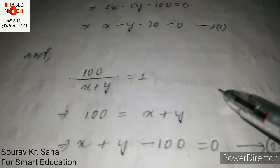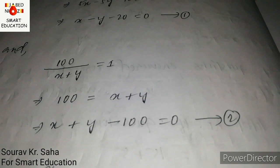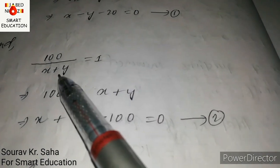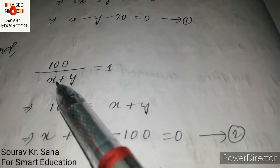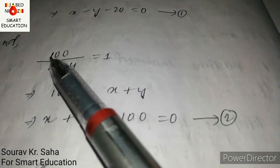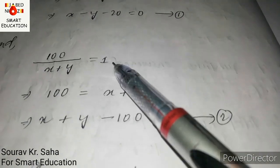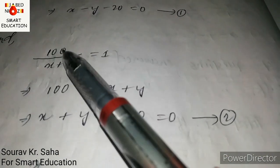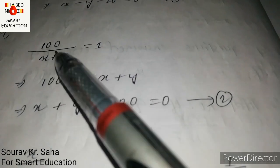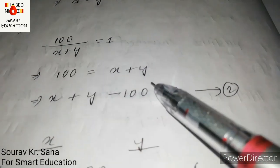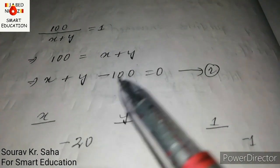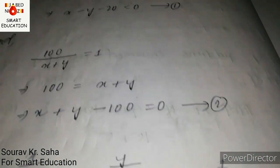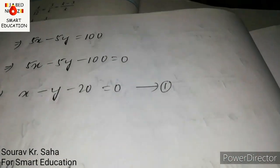When they travel towards each other (opposite direction), the relative speed is x plus y and distance is 100 km covered in 1 hour. So 100 divided by (x plus y) equals 1, giving x plus y equals 100. Rearranging: x plus y minus 100 equal to 0. This is equation two.